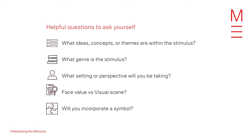Before you put pen to paper, you need to think about how you'll work the stimulus into your story. A few helpful questions to ask yourself are: what ideas, concepts or themes does the stimulus contain or represent? What genre of story writing is the stimulus pushing you towards? What setting or perspective will you be taking? If you have a visual stimulus, will you incorporate that visual scene as a moment in time in your story's plot? Will you be incorporating a symbol from within the stimulus as the overarching message — more like a motif?